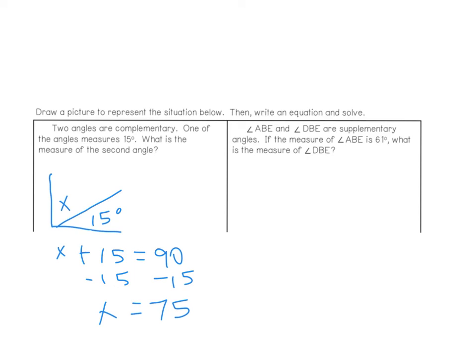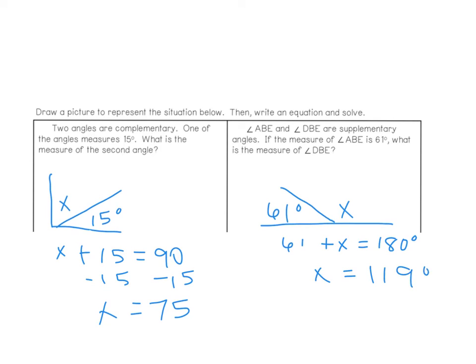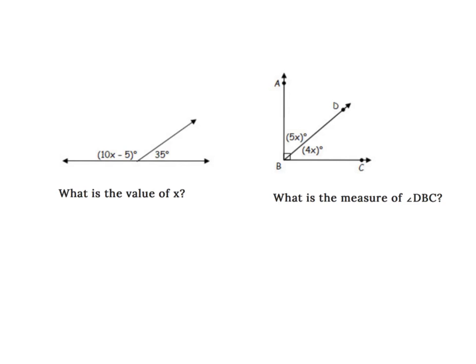The next one says angle ABE and DBE are supplementary. If ABE is 61 degrees, what is the measure of DBE? I draw a supplementary angle with one side measuring 61 degrees, and set up 61 plus X equals 180. Subtracting 61 from both sides gives us X equals 119 degrees. Try the next two on your own — set up the equation, solve it, then press play to see if you got the correct answer.